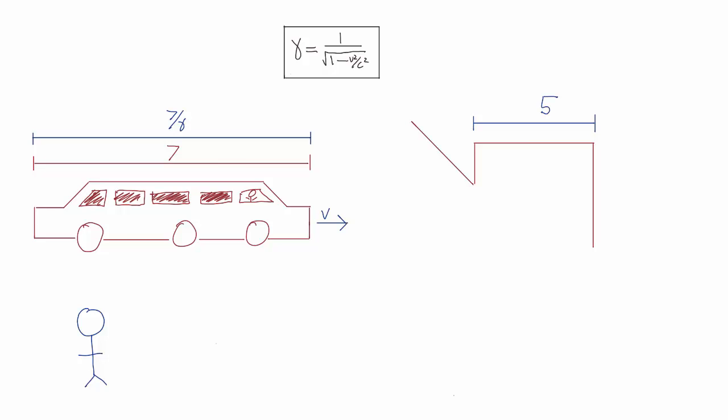See, in Alice's frame of reference, she is stationary, and the garage is moving towards her at a speed v. Now, if the garage is moving, this means it's the garage that undergoes length contraction. But it was already too short in the first place.